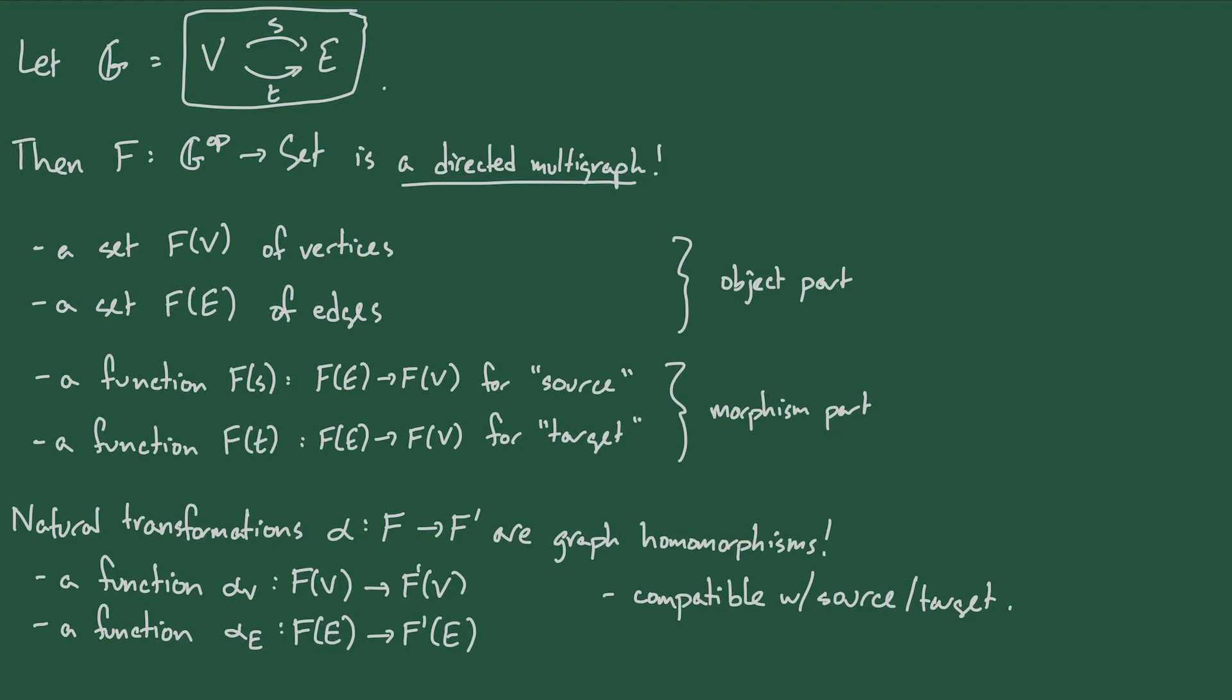So in other words, F and F prime correspond to two graphs, and a natural transformation from F to F prime is exactly a graph homomorphism of the corresponding graphs. This might be a good time to pause and think about why naturality squares are the same as the condition of being a graph homomorphism.